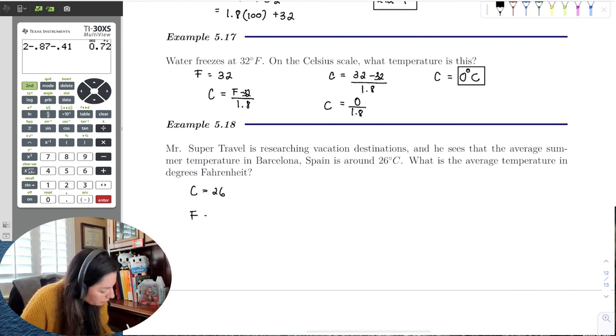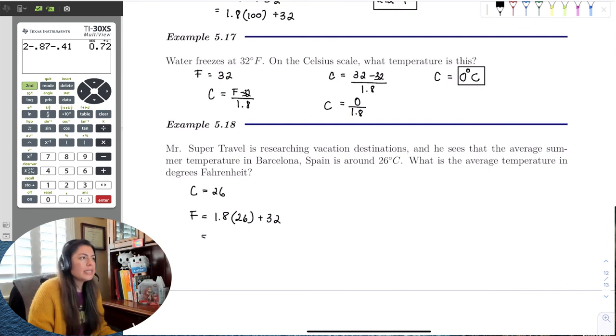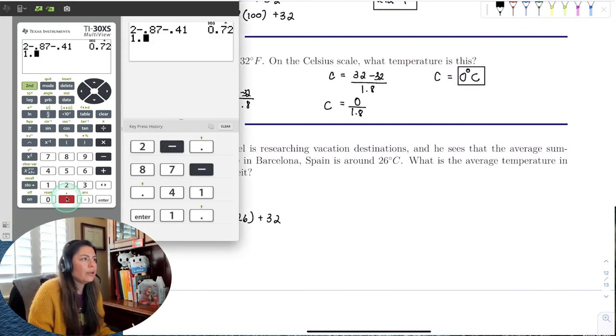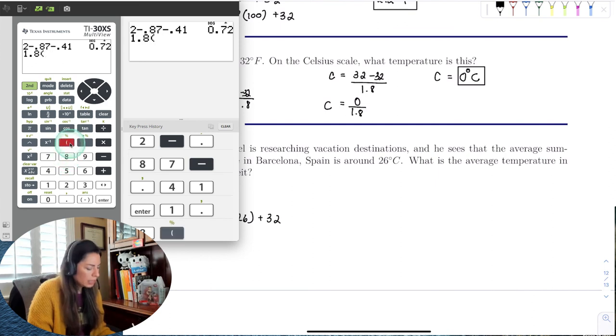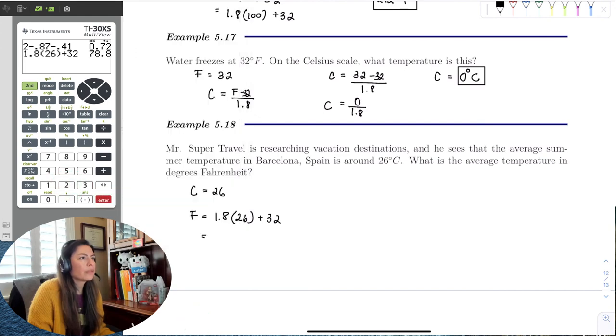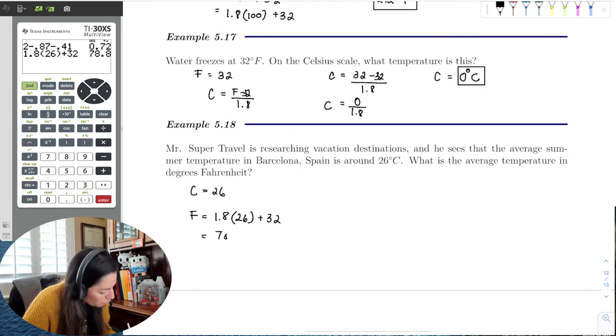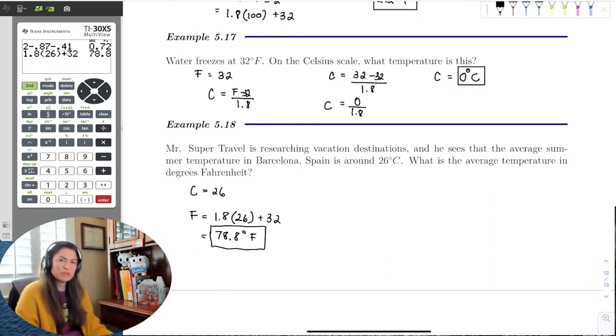It's a quick calculation. Let's go ahead and put it in our calculator: 1.8 times 26 plus 32. Great, 78.8 degrees Fahrenheit. That is some nice temperature to go to Barcelona and near the beach too, right? So 26 degrees Celsius for us, it looks a little colder, but it's actually pretty warm. It's almost 80 degrees in Barcelona, Spain in summer. So it sounds nice, huh?